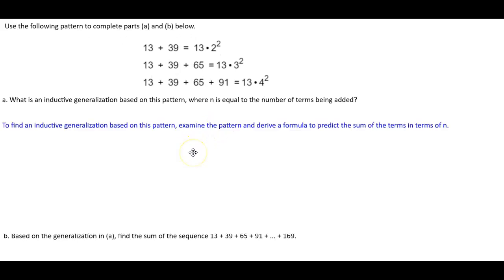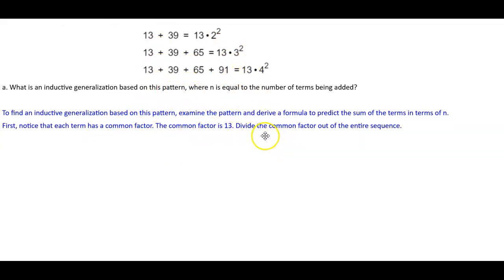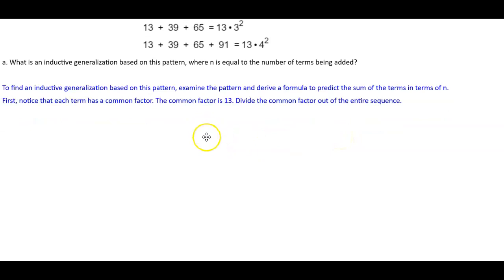To find an inductive generalization based on this pattern, we examine the pattern and derive a formula to predict the sum of the terms in terms of n. First, notice that each term has a common factor of 13. We're going to divide the common factor out of the entire sequence.